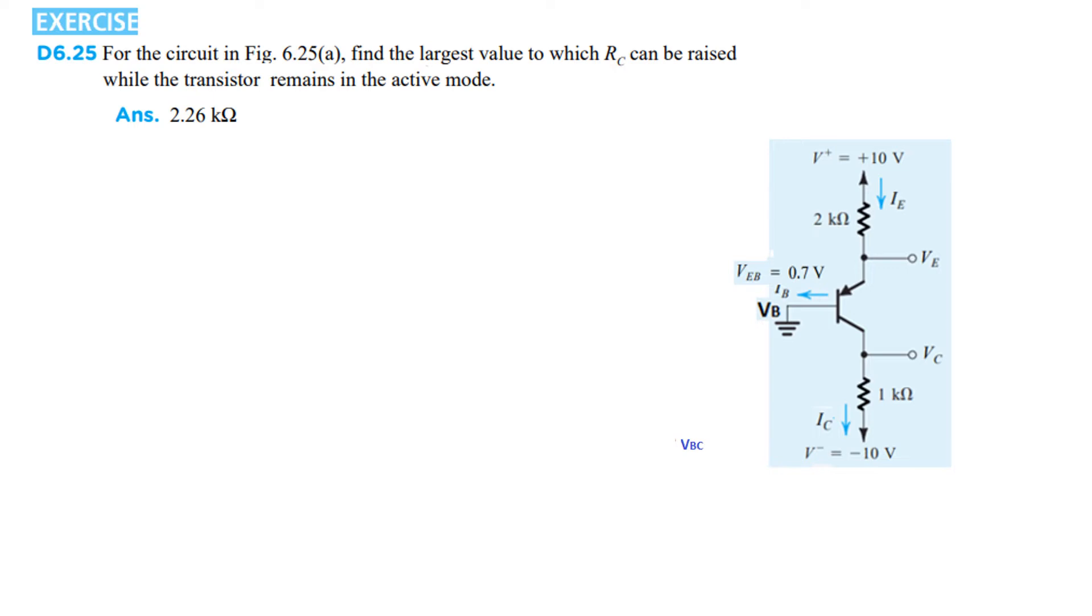Now, we come to exercise 6.25. For the circuit in figure 6.25, find the largest value of RC that can be while the transistor remains in active mode. From this formula, we can find VE. Look, this is grounded. We know this is 0.7. So, VE will be 0.7 plus VEB is equal to VE. That is VE is 0.7 volt.